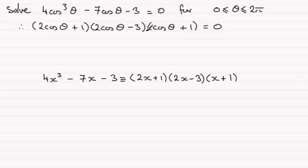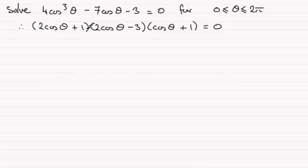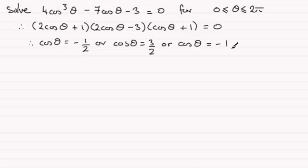When we get something like this, we can say that each of these factors must equal 0. That means if 2 cos theta plus 1 equals 0, then cos theta equals minus 1 half. Or if 2 cos theta minus 3 equals 0, we'd have cos theta equals 3 over 2. And finally, for cos theta plus 1 equaling 0, cos theta equals minus 1. So we've got three separate equations that we need to solve.